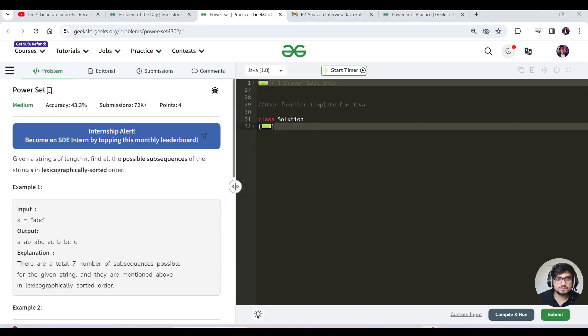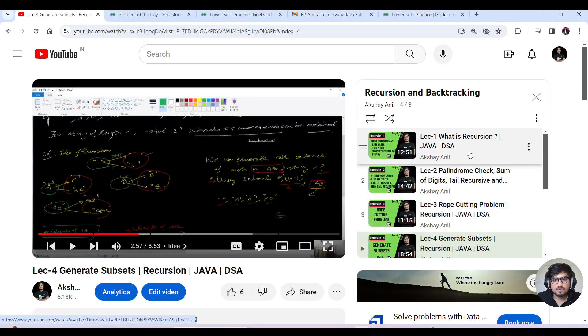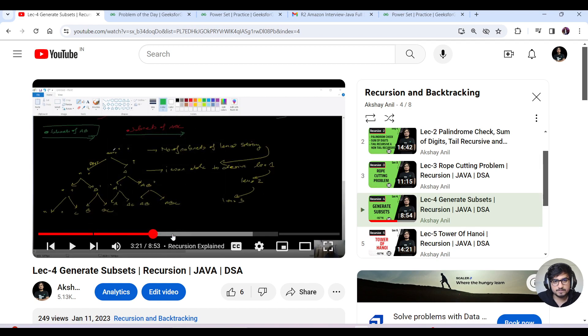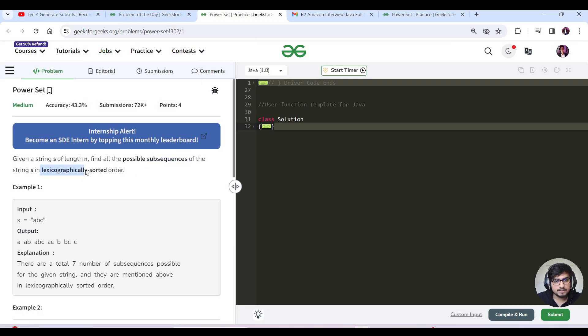Hello everyone, this is Akshay. Let's continue with today's GFGPOTD. Today's question is PowerSet. I have done this question in my past recursion and backtracking playlist. There is one lecture for generating subsets. This is the same question as today's problem of the day. The only difference is that here you need to print the subsets in lexicographically sorted order, and then you sort it.